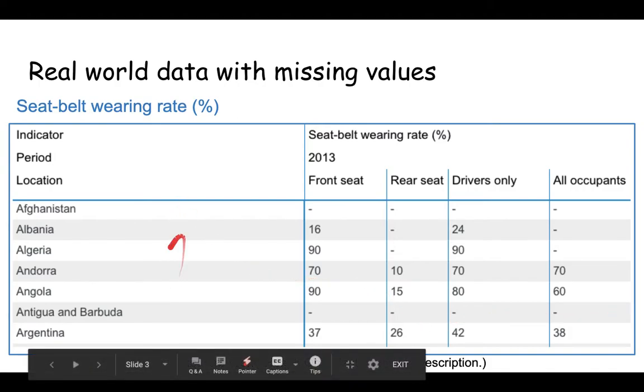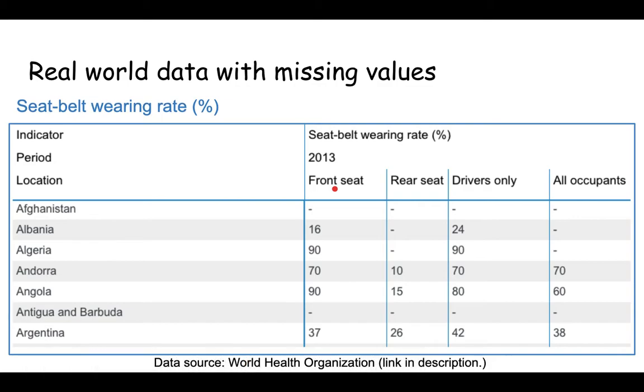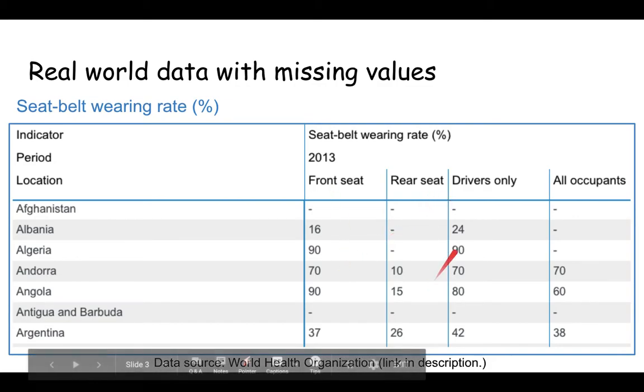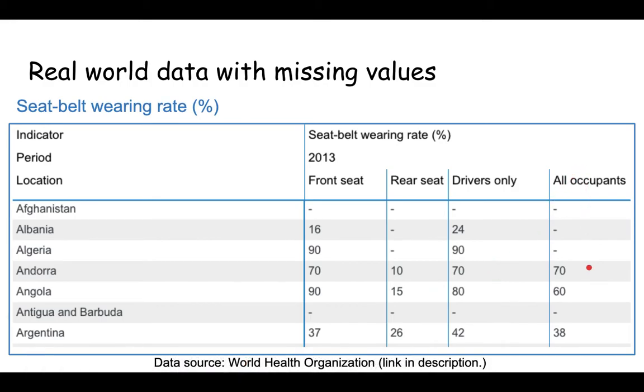As you can see, there are five columns. The first column has countries in them, then the next four columns have the front seat driver, front seat people who wear seat belt, rear seat, drivers only, and cases where all occupants wear the seat belt. And here we can see that there are plenty of missing values and they are denoted here by a hyphen.